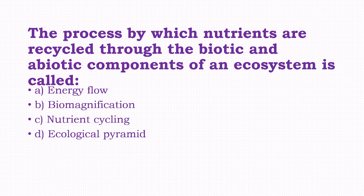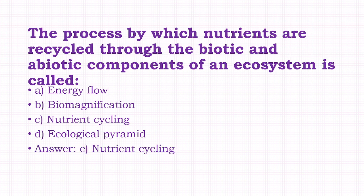The process by which nutrients are recycled through the biotic and abiotic components of an ecosystem is called: energy flow, biomagnification, nutrient cycling, ecological pyramid. The answer to this question is option C, that is nutrient cycling.